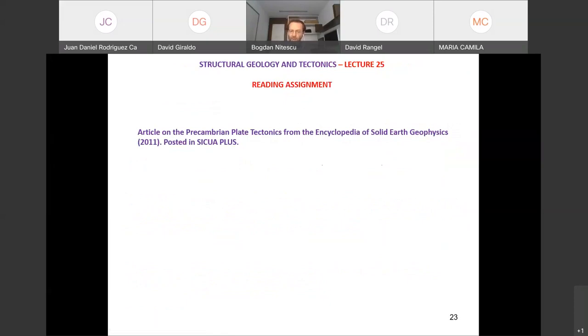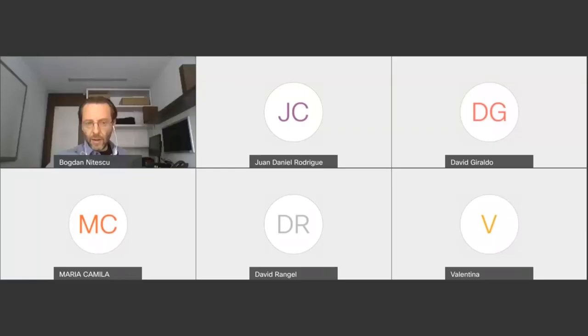Finally, I want you to read this article from the Encyclopedia of Solid Earth Geophysics on Precambrian plate tectonics. Generally, they favor the idea of plate tectonics initiating in the Archean, but they give a very balanced view. They show a colored version of the Stern model. This is it for today. This is it in terms of the Precambrian, Precambrian tectonics.